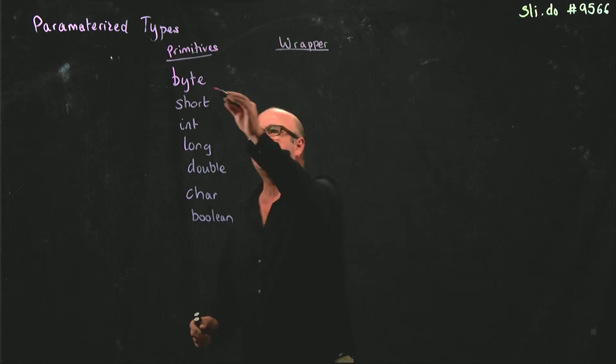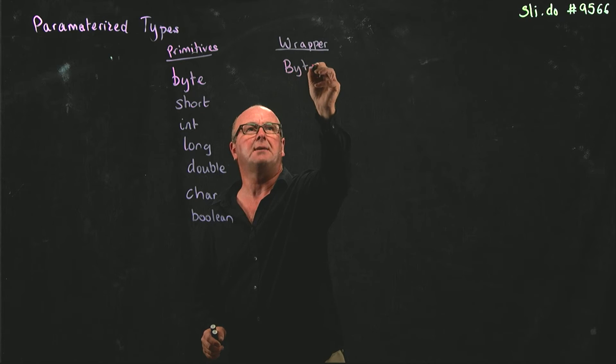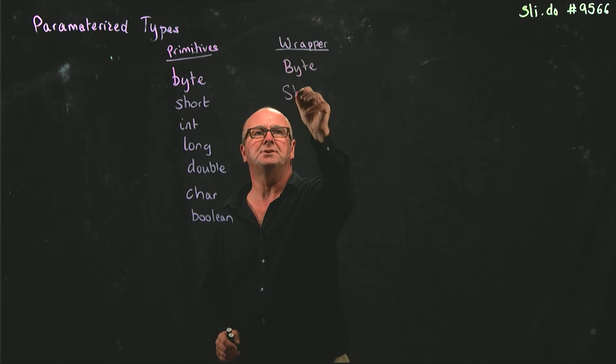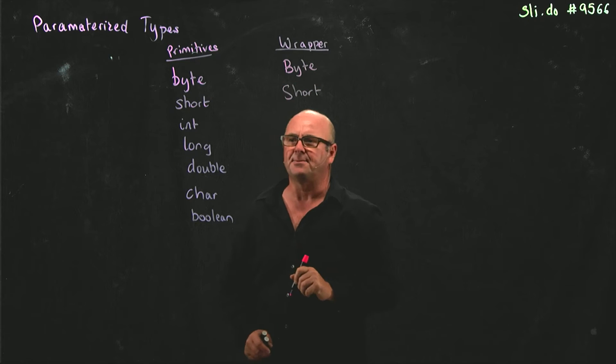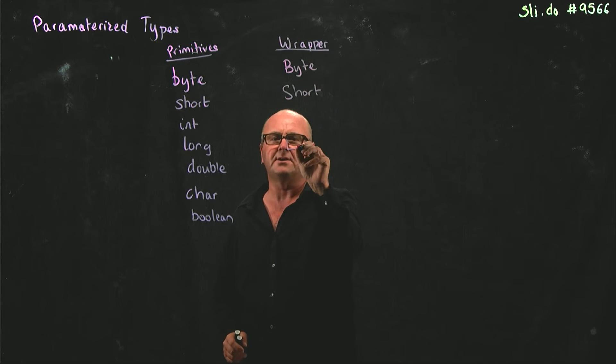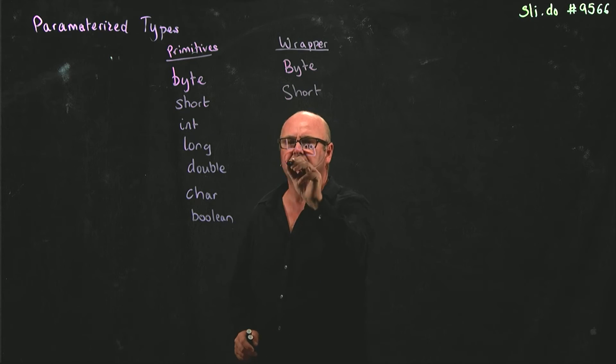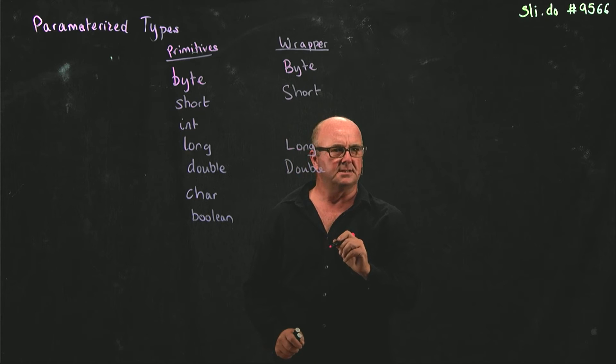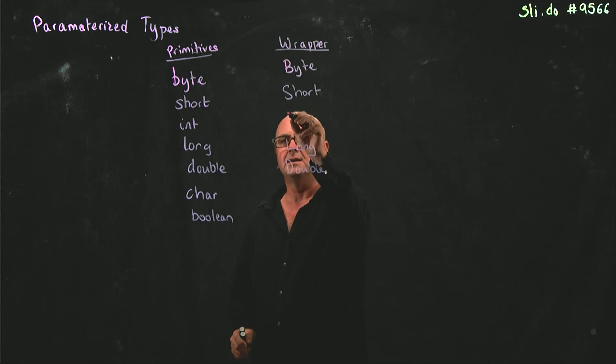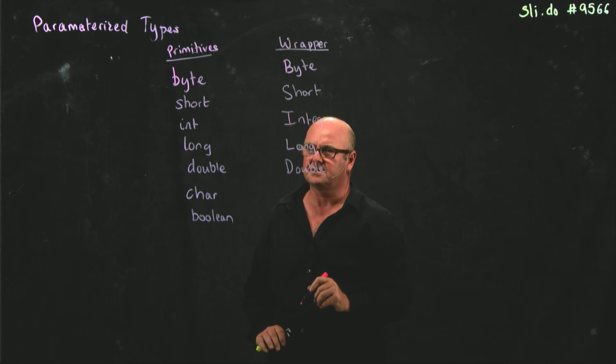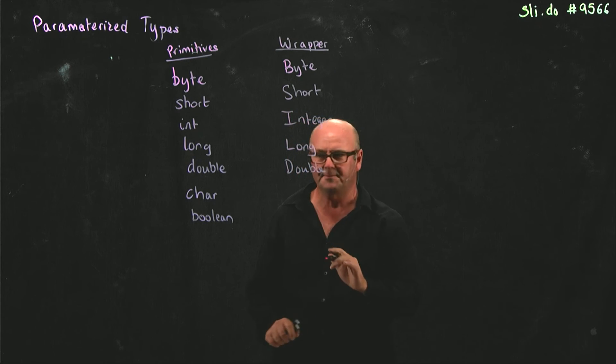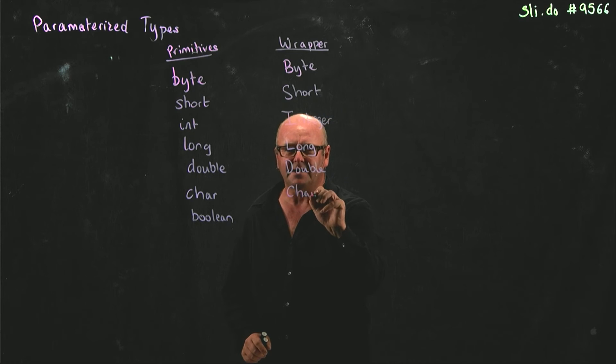So the wrapper for byte is Byte with a capital B. The wrapper for short is Short with a capital S. The wrapper for long is Long with a capital L. The wrapper for double is Double with a capital D. Guess what the wrapper for int is? It's Integer with a capital I. Don't ask me, that's not how I would have done it. And char is Character with a capital C, and boolean is Boolean with a capital B.